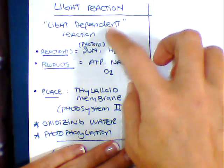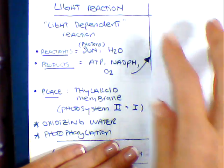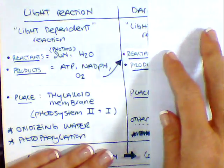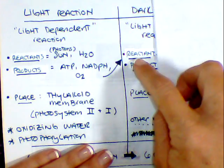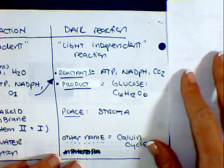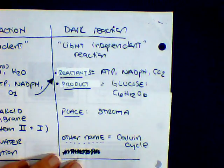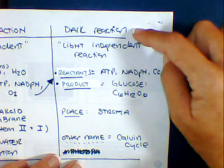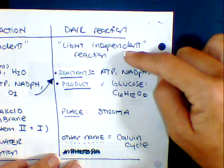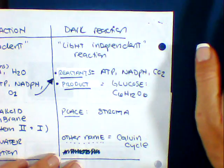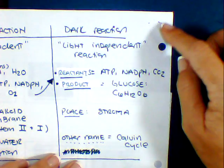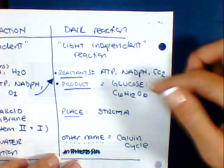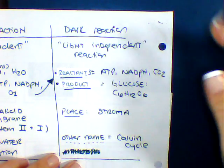Now, the cool thing about the light dependent versus the dark reaction is that the products become the reactants. So these guys actually in turn help generate this second cycle. So the dark reaction is also known as light independent. So we don't need light in order for this to happen. However, this does happen during the day. So just don't get confused on that.